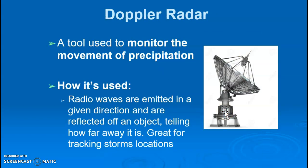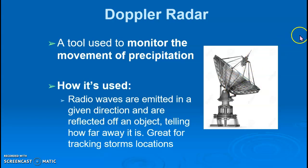The Doppler radar is a tool used to monitor the movement of precipitation. It emits radio waves in a given direction; when those waves reach an area with rain, they reflect back information. This is great for tracking storm locations — you can know exactly where a storm is based on the reflected wave data recorded.